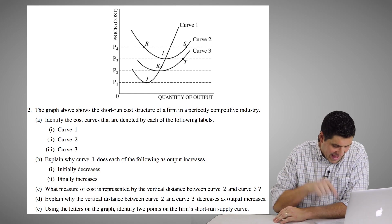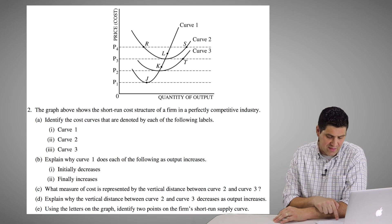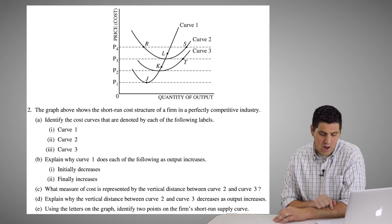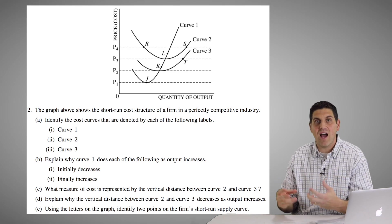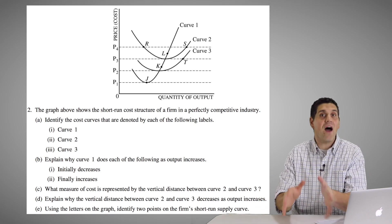The people who wrote the free response, the actual answer is one point earned for stating the fixed cost is spread over a larger quantity, so the average fixed cost decreases. Again, you're spreading that fixed cost over larger and larger amounts of output.